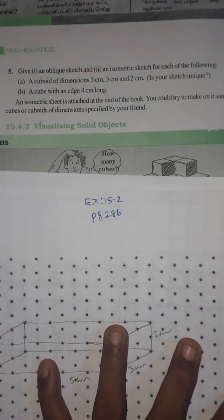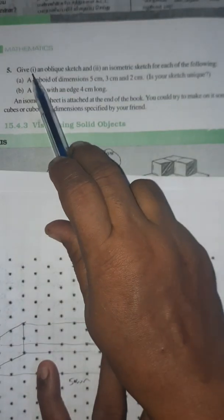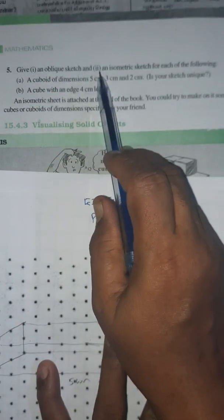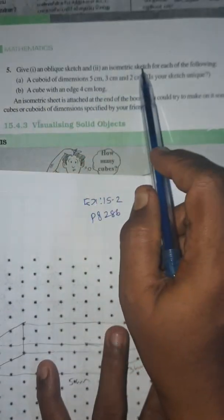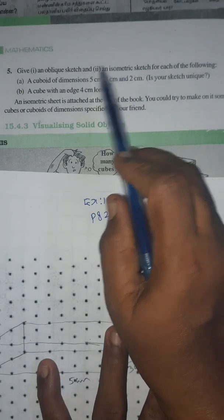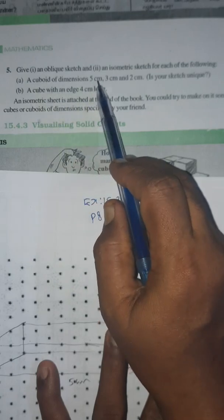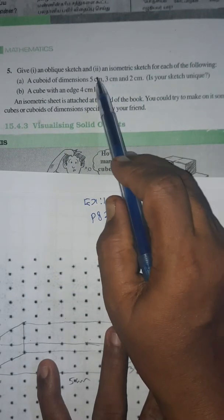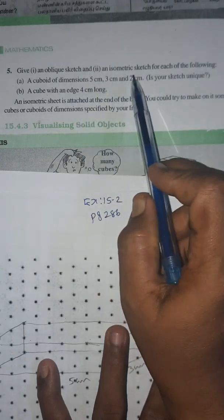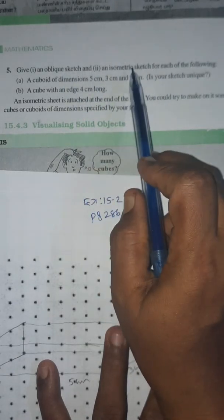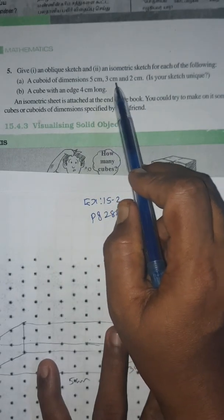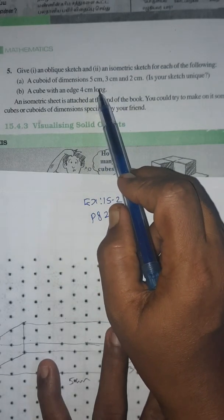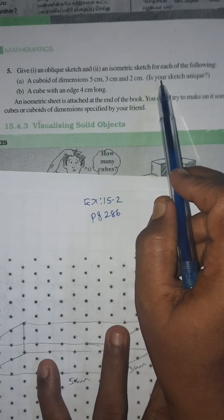Today we are going to see exercise 15.2, page number 286, for NCERT 7th standard, 5th sum. We have to give an oblique sketch and an isometric sketch for each of the following: first, a cuboid of dimensions 5cm, 3cm, and 2cm (length, breadth, height), and second, a cube with an edge 4cm long.